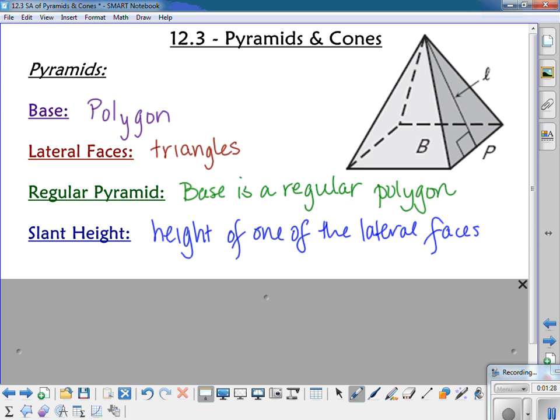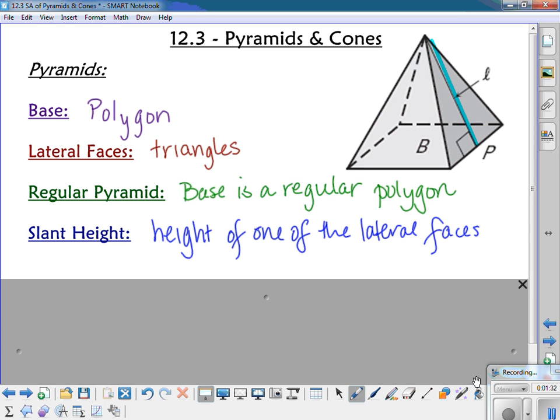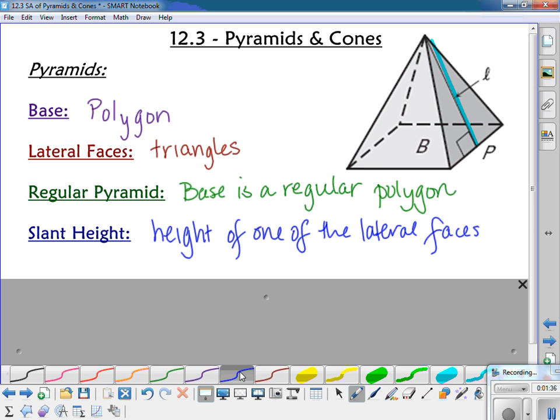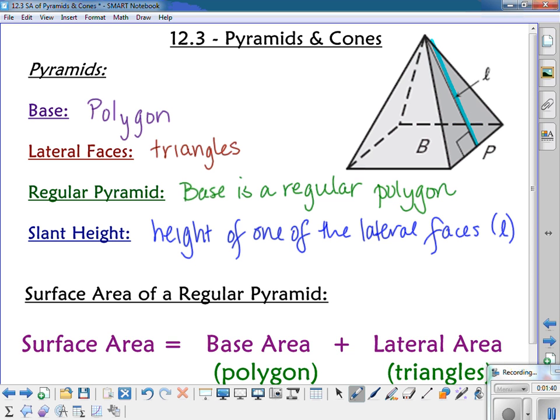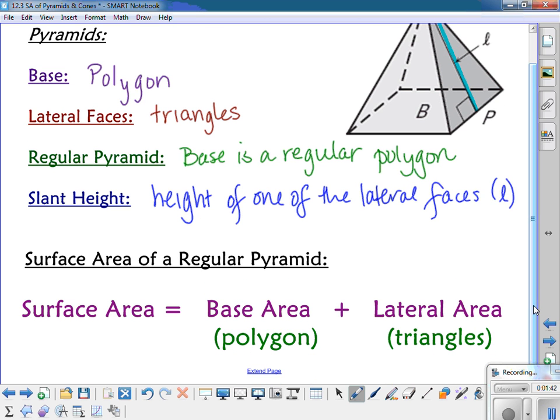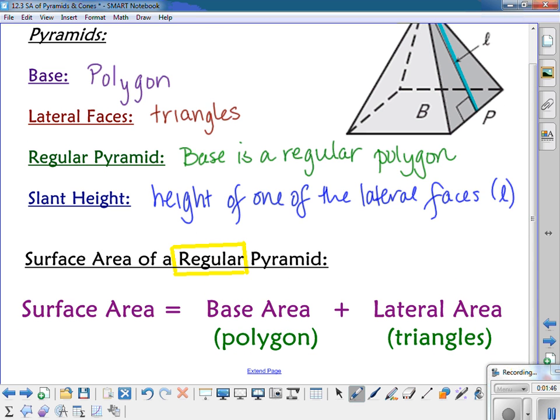The slant height is the height of one of the lateral faces. So looking at the figure over here, L right there represents my slant height. So if I want to find the surface area of a regular pyramid, and it's important you realize this only works for regular pyramids, it's going to be the base area, which is a polygon, plus the lateral areas, which are triangles.